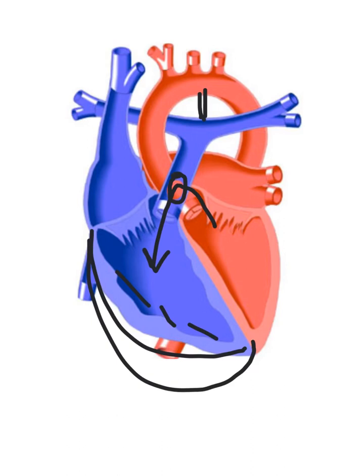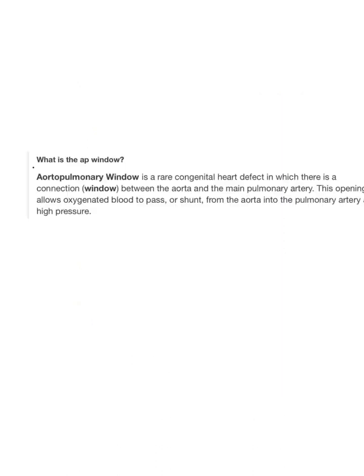That's one of the things I want to tell you because it is important to recognize this defect when you see it. Aortopulmonary window is a rare congenital heart defect in which there is a connection — a window — between the aorta and the main pulmonary artery. This opening allows oxygenated blood to pass or shunt from the aorta into the pulmonary artery at high pressure.